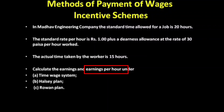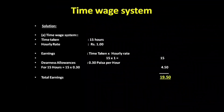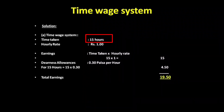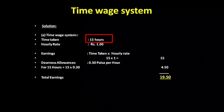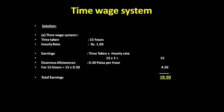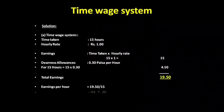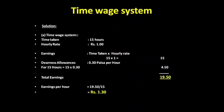So the earnings per hour: the total is 19 rupees 50 paise divided by 15 hours, giving 1 rupee 30 paise per hour. This is a time-based system, and it is very easy to solve these problems.